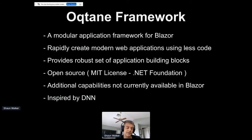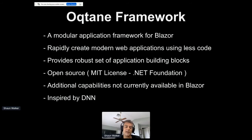Octane also provides additional capabilities not currently available in Blazor, much like DNN pushed the limits on what ASP.NET 1.x and 2.x provided out of the box. Octane does the same thing in the Blazor environment. I say it's inspired by DNN — this goes back to tearing DNN down to the bare foundation and building it up again. There are certain things DNN did very well, and those are the characteristics I wanted to carry forward into the Octane framework.